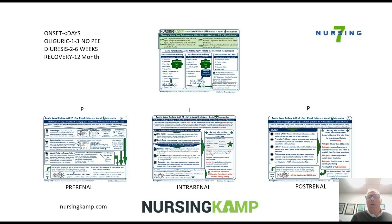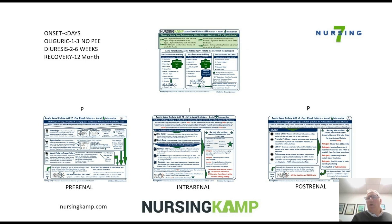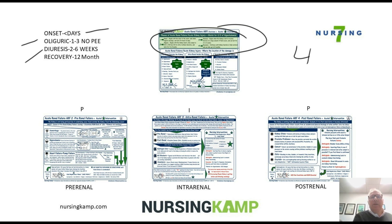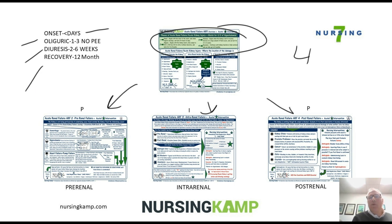When we're talking about pre-renal concerns, all of them are going to go through four specific phases: onset, oliguric, diuresis, and recovery. The onset is important because it can last for a few days, and this could be a pre-renal situation, an intra-renal, or post-renal situation.